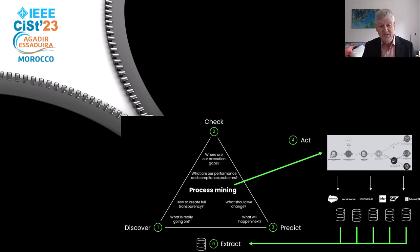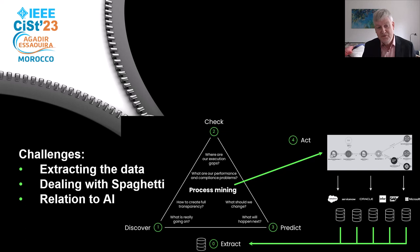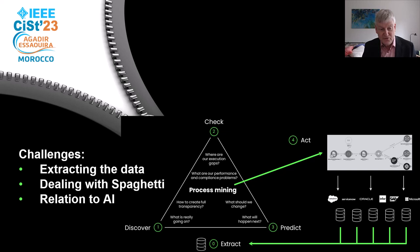This is process mining seen from a top-down view. In this keynote, I'm going to talk about object-centric process mining. I'll explain that the challenges are often in extracting the data, that you typically get spaghetti-like processes with much more variability than people think, and that this provides opportunities to improve processes. I will also show that object-centric process mining helps you exploit innovations in AI, like large language models.